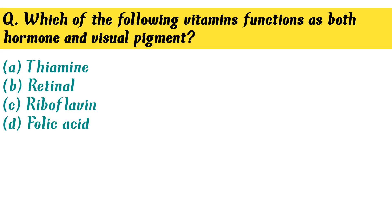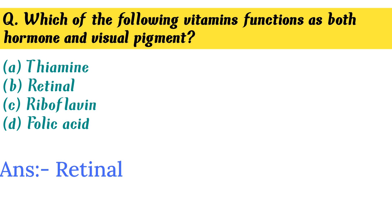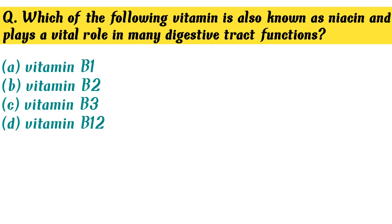Which of the following vitamins functions as both a hormone and visual pigment? Option B. Retinal is the correct answer.